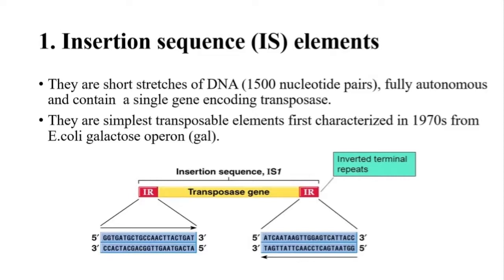This is the basic structure of an insertion sequence element. It consists of a coding region in the center, and this coding region is surrounded by two almost identical sequences. These identical sequences are in inverted orientation with respect to each other, so they are called inverted terminal repeats. The length of inverted terminal repeats varies from 9 to 14 nucleotide pairs.